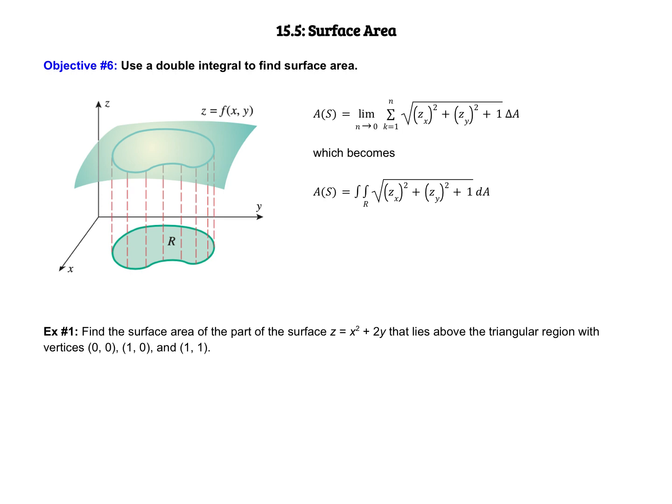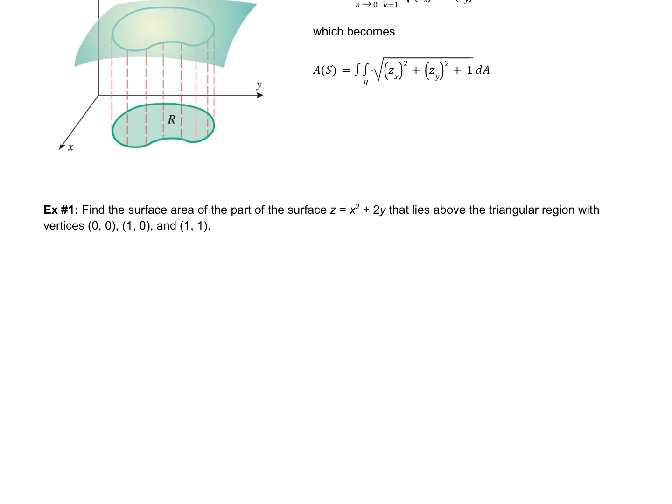This should be a pretty quick video. We're going to do three examples. Let's take a look at this first example. Find the surface area of the part of the surface z = x² + 2y that lies above the triangular region with vertices (0,0), (1,0), and (1,1).